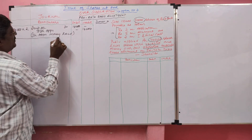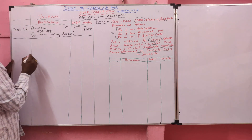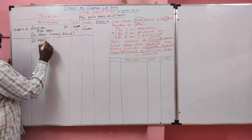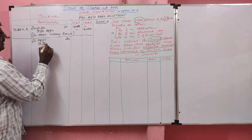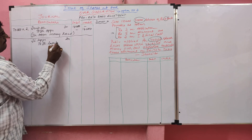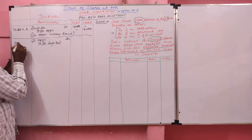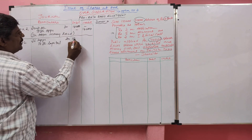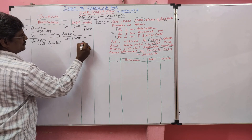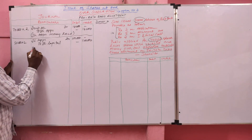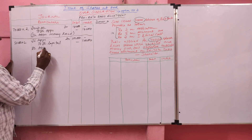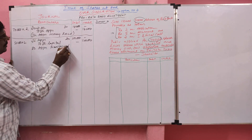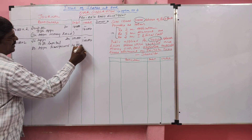The received share application money should be transferred to the share capital. The entry is Share Application Account Dr to Share Capital. How many shares can we transfer? 50,000 share application only — we can transfer to the capital account.